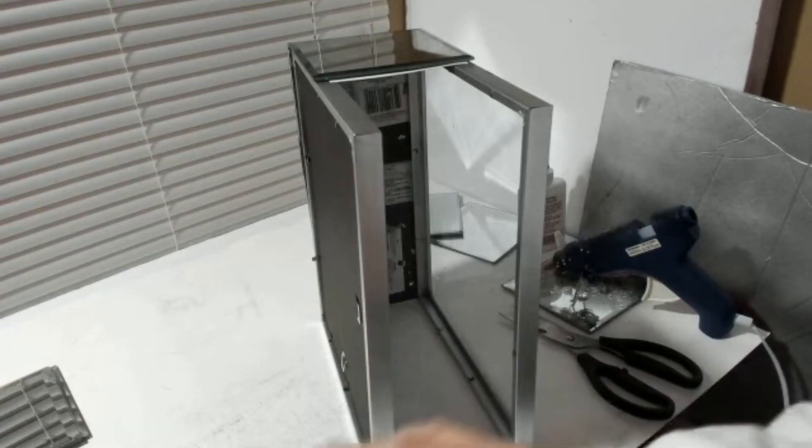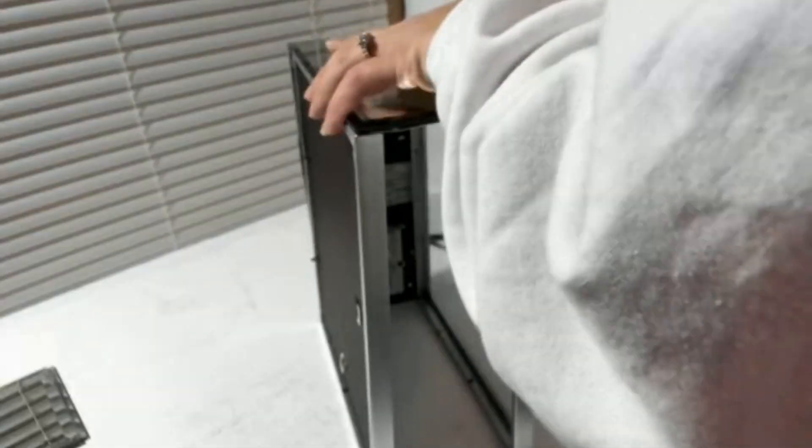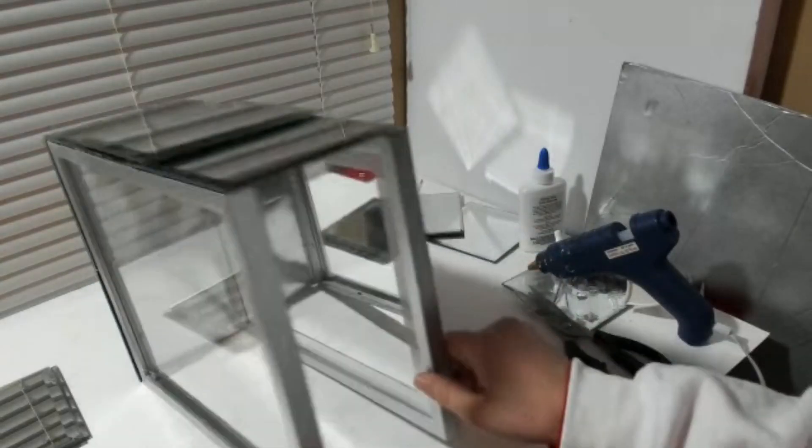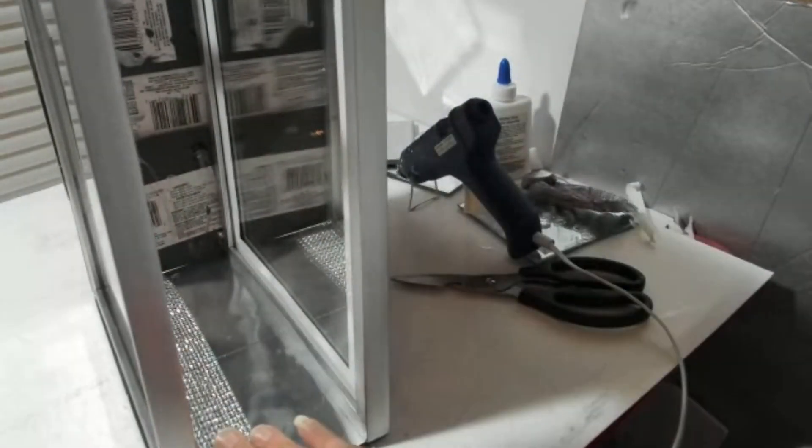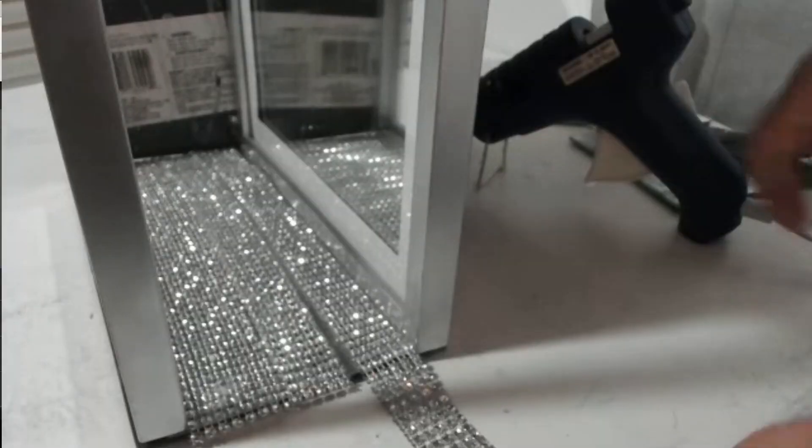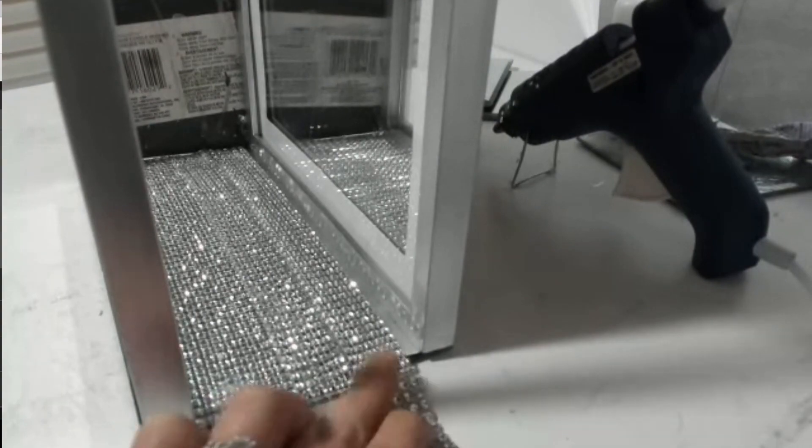After this then I kind of just turn it on its side to start gluing the square mirrors to the picture frame. I found it was a lot easier and also just to give it a little more extra shine, I'm just going to take some diamond wrap and I'm going to glue a couple of rows of it on the inside.